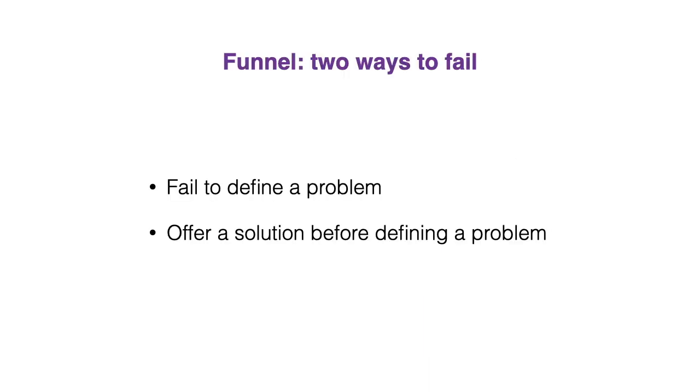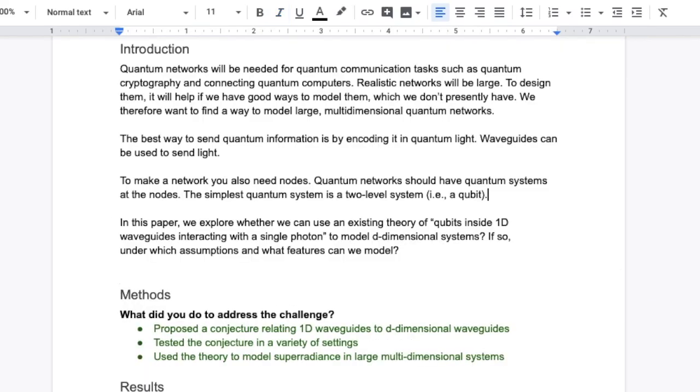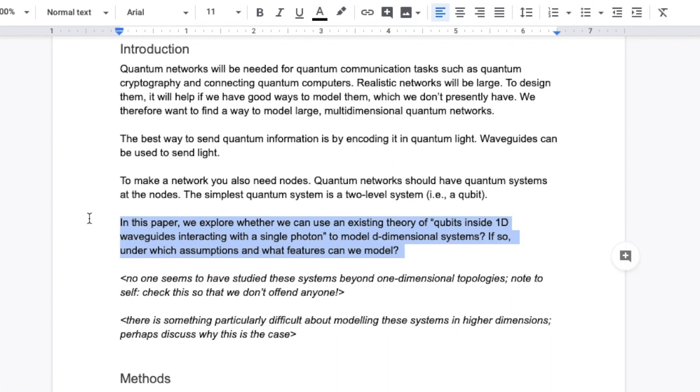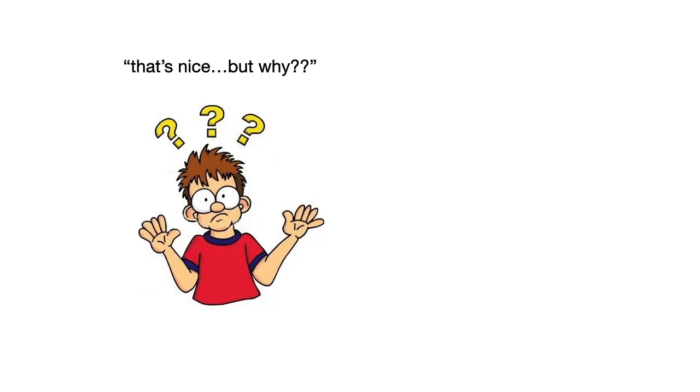When it comes to the funnel, there are two ways that you can fail. The first is failing to define a problem, and the second is to offer a solution before defining the problem. In my example, if I left these sections out, we would be presenting a solution, but it won't be obvious to the reader what problem we're trying to solve. Somewhat less bad would have been to put the solution first and then explain the problem. This sounds silly to do, but I find it surprisingly common. To the reader, this can be equally as frustrating if they get stuck at this point and don't read on further.